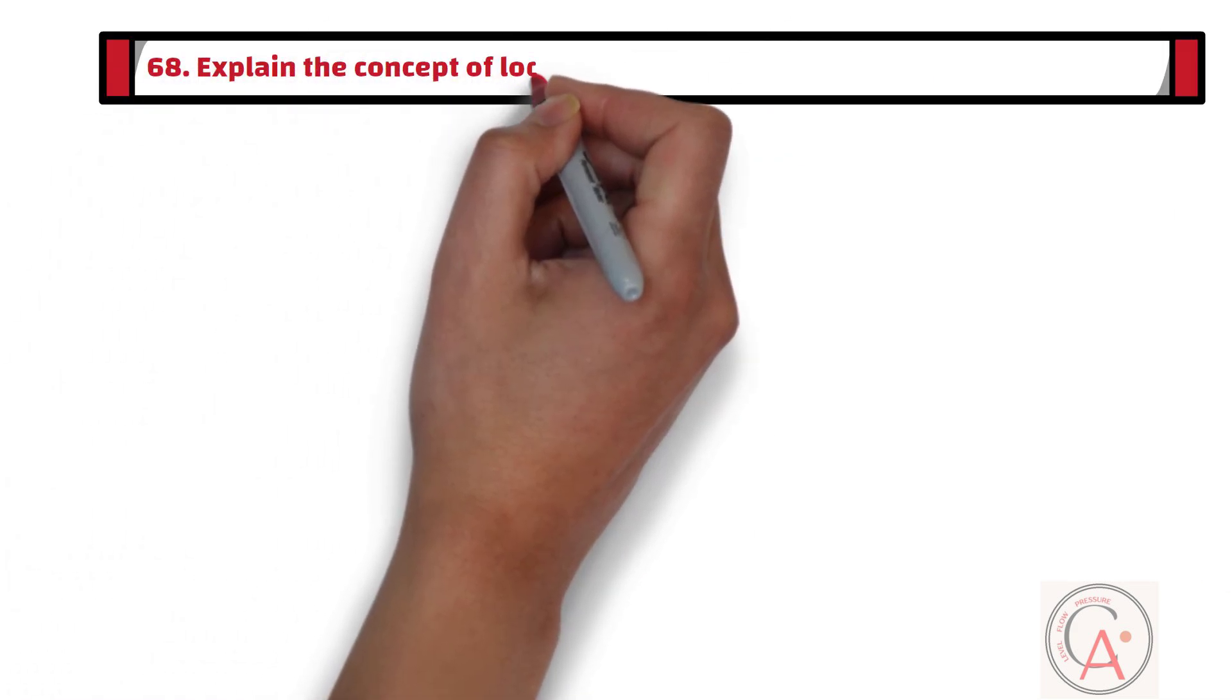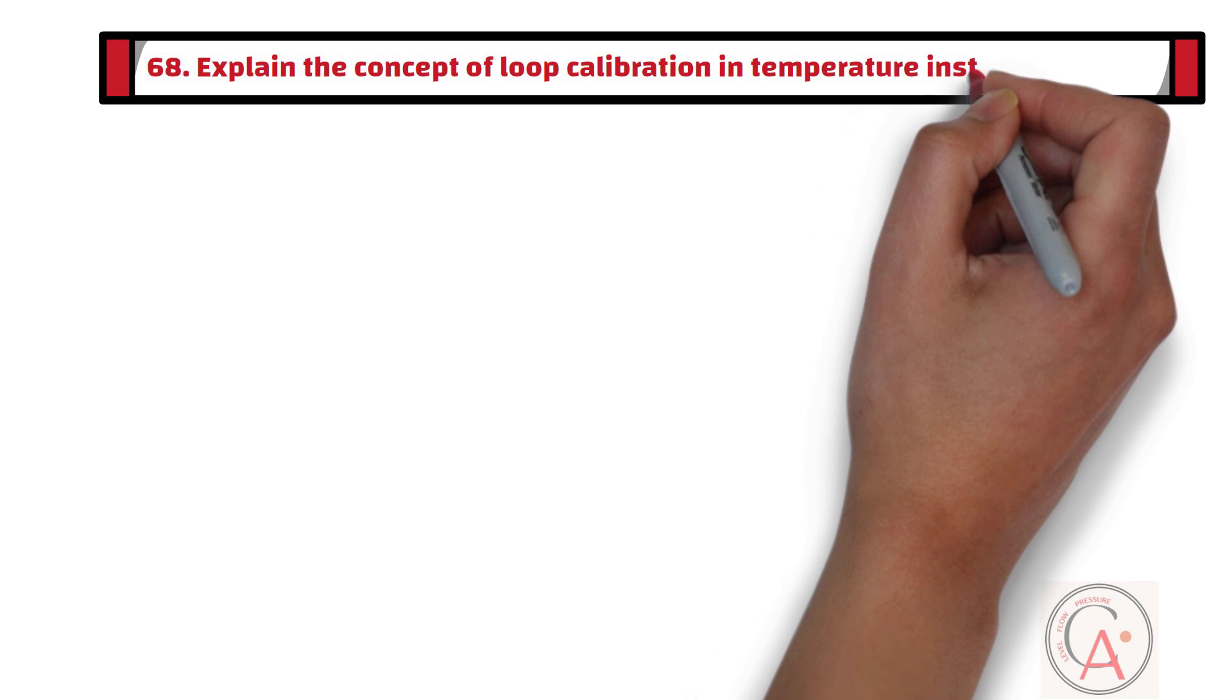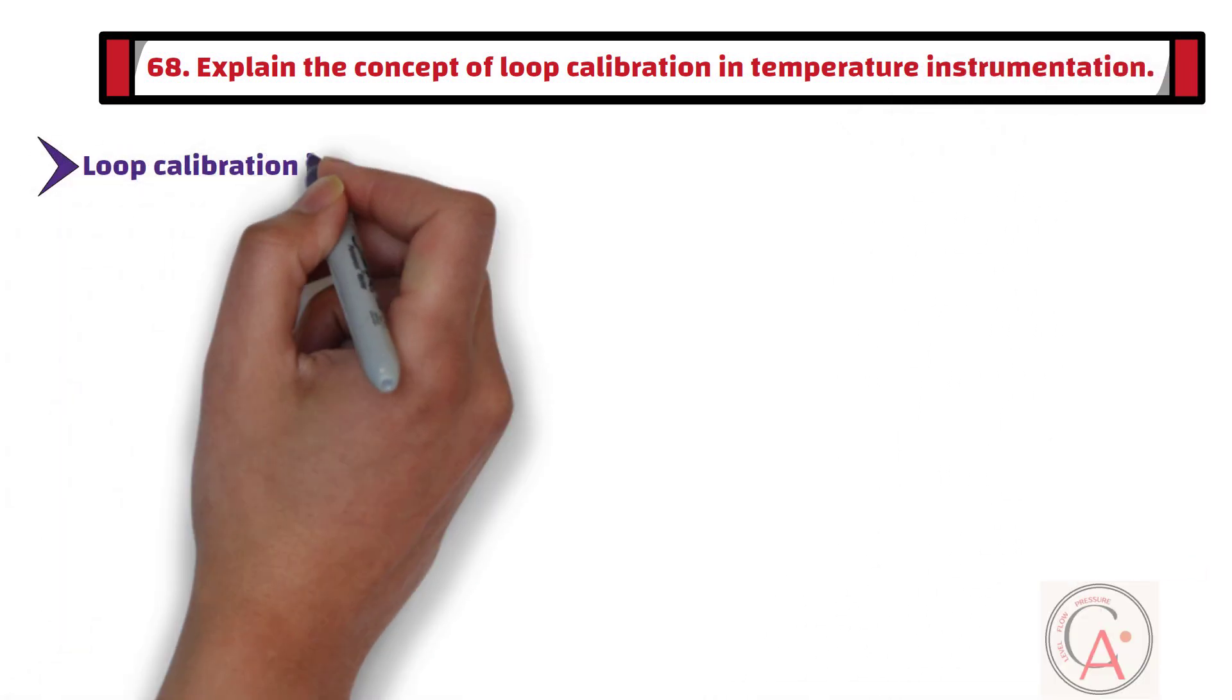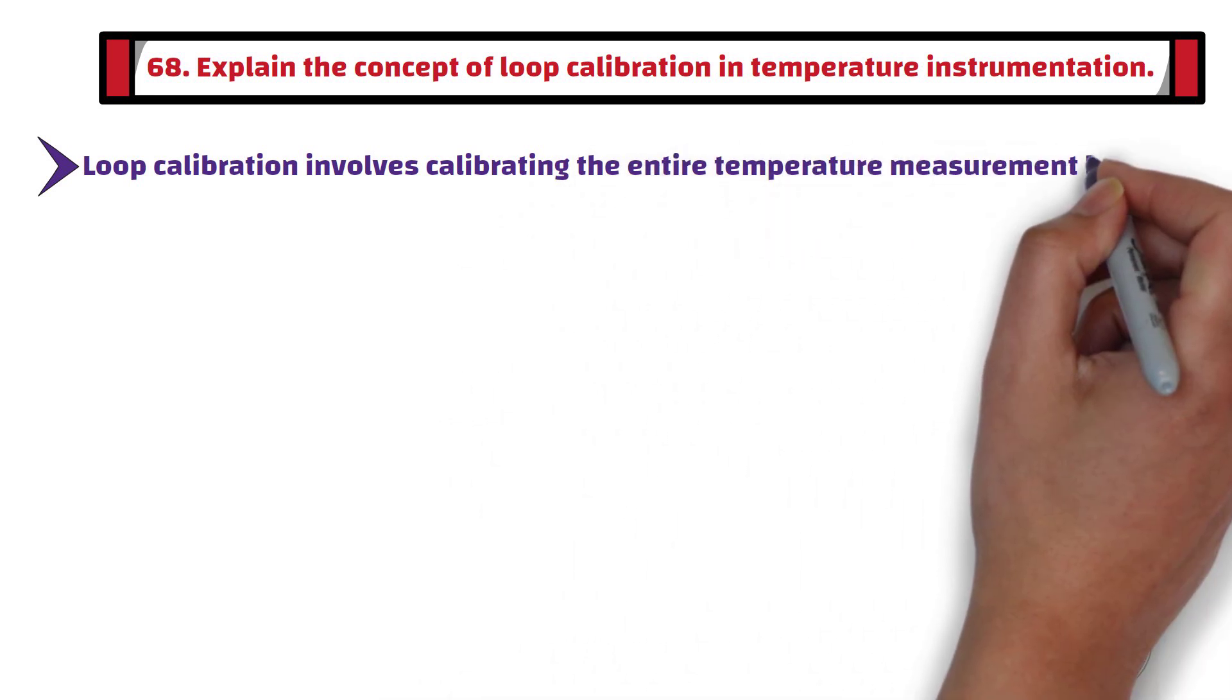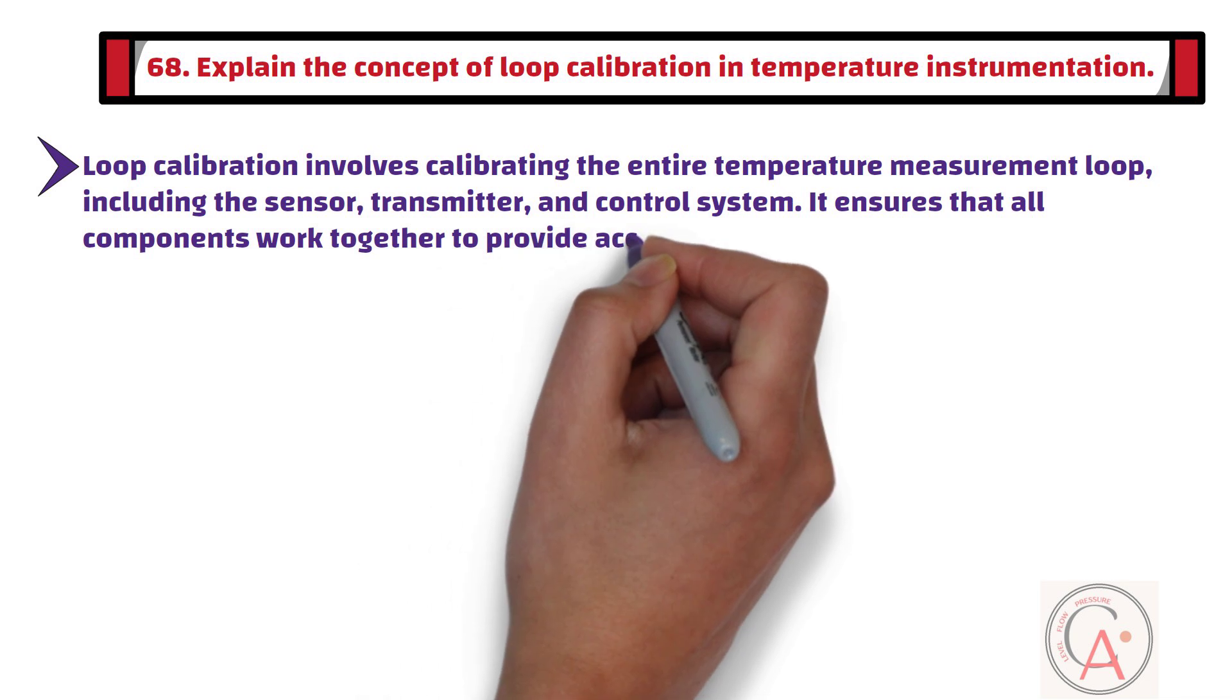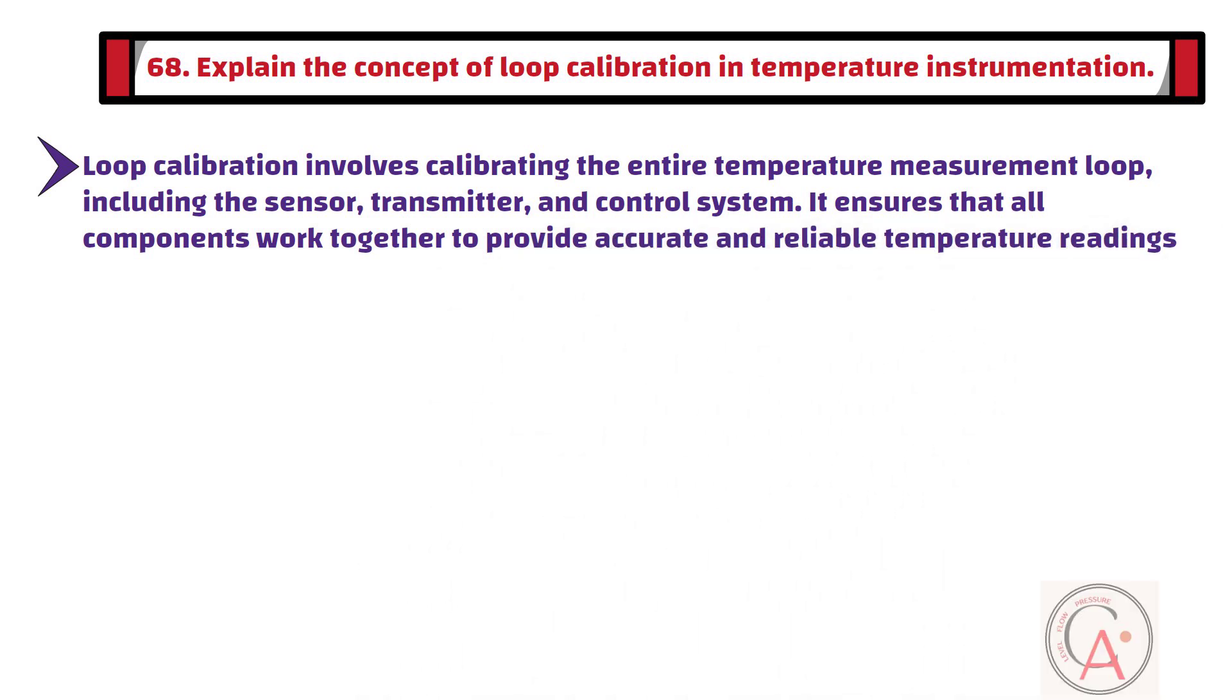Question number 68: Explain the concept of loop calibration in temperature instrumentation. Loop calibration involves calibrating the entire temperature measurement loop, including the sensor, transmitter, and control system. It ensures that all components work together to provide accurate and reliable temperature readings.